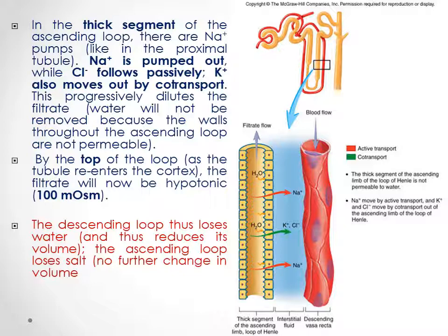By the top of the loop of Henle, as the tubule re-enters the cortex, the filtrate will be hypotonic — the osmotic pressure decreases to about 100 mOsm. You have to distinguish between the descending and ascending loops of Henle: the descending loop loses water, while the ascending loop loses salt.